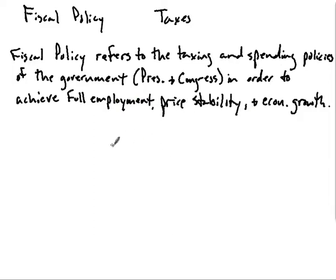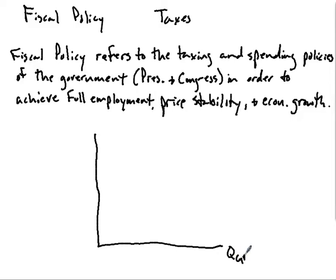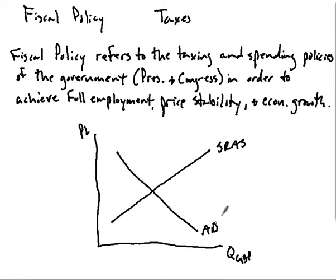What we need to do is draw the graph of the economy. If you recall, the quantity on the horizontal axis is real GDP, and on the vertical axis we have the price level. The upward sloping curve is short-run aggregate supply, and the downward sloping curve is aggregate demand. That vertical line is our long-run aggregate supply.